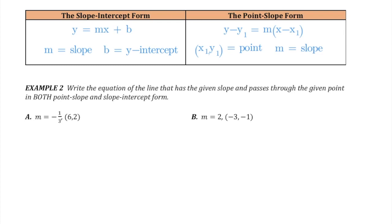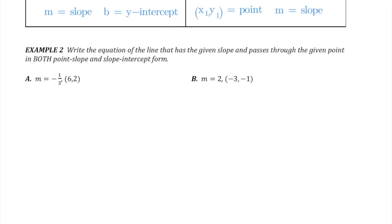In example 2, we're asked to write the equation of a line that has the given slope and passes through the given point in both point-slope and slope-intercept form. The key thing to notice here is that we have a slope and a point. And if that's what you're given to start with, then the obvious choice to use is the point-slope formula. I'm going to start by writing out the formula. Every time you use it, you should write it first.